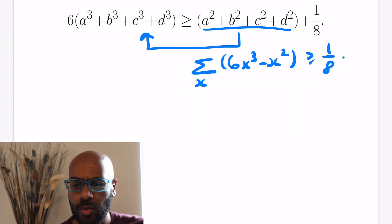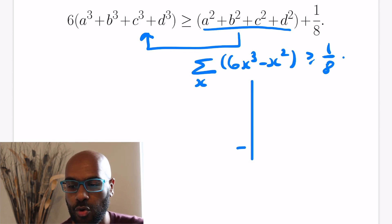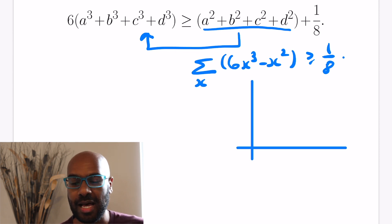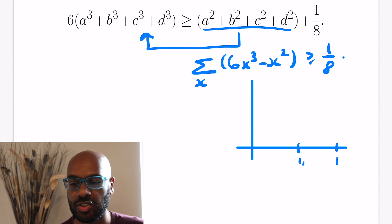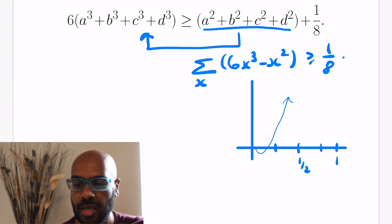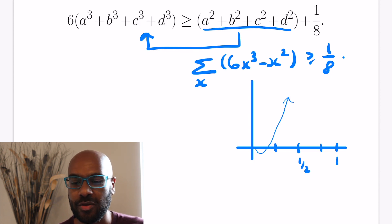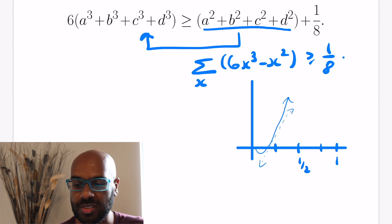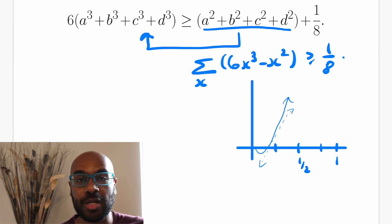We think about the function f(x) = 6x³ - x² and graph it as a function of x. Since our variables are between 0 and 1, we graph on the interval [0, 1]. Equality is likely to occur when all variables equal one fourth, because of the symmetry involved. So we take a look at the tangent line to the curve at x = 1/4.